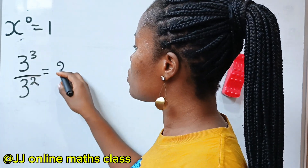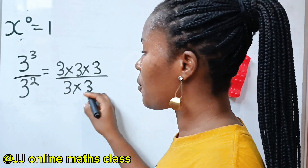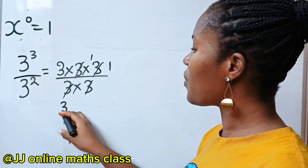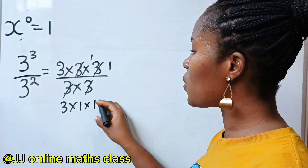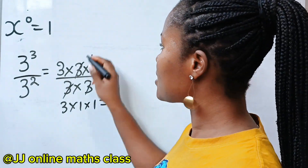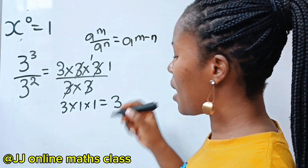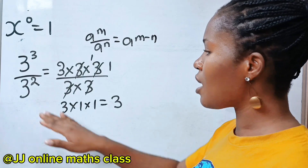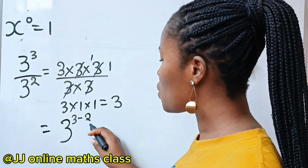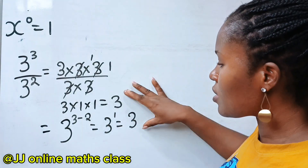This can be expanded to 3 times 3 times 3 divided by 3 times 3. This will divide itself to give us 1, and this will divide itself to give us 1. So we have 3 times 1 times 1, which is 3. Now if we apply the law of exponents, which says a to the power of m divided by a to the power of n equals a to the power of m minus n, another way to solve this is 3 to the power of 3 minus 2, which gives us 3 to the power of 1, which is 3. So you can see that we got the same solution.